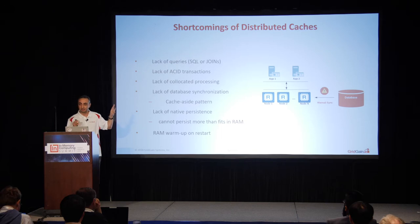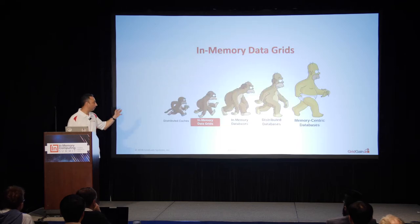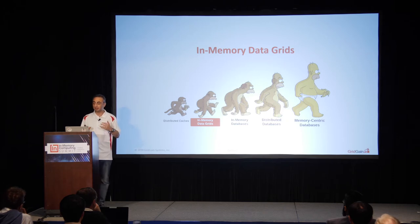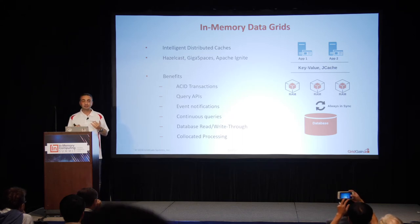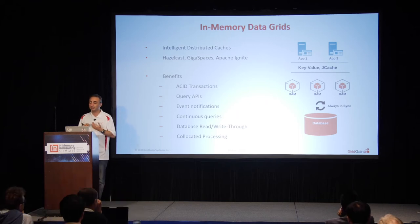To summarize: distributed caches still exist today and are very useful — very good for cloud deployment — but they have very basic features and functionality. To address that, we move further in the evolution chain. In-memory data grids came around exactly to address the limitations of distributed caches. When you think of in-memory data grids, think of distributed caches with intelligence — distributed caching with brains.